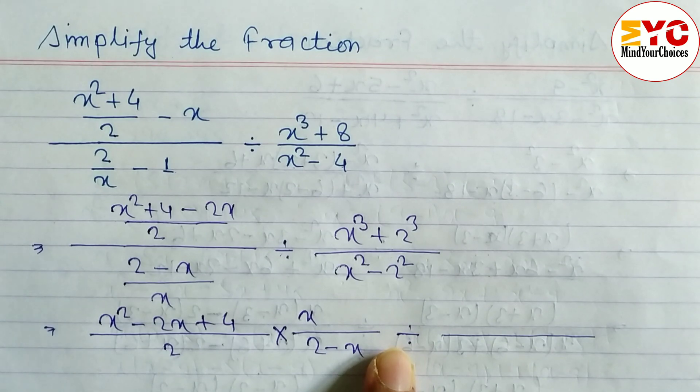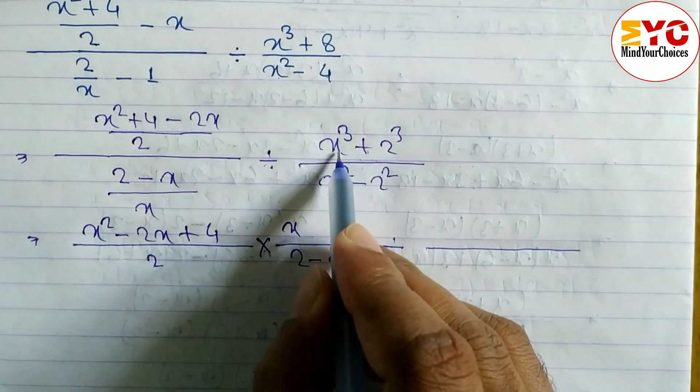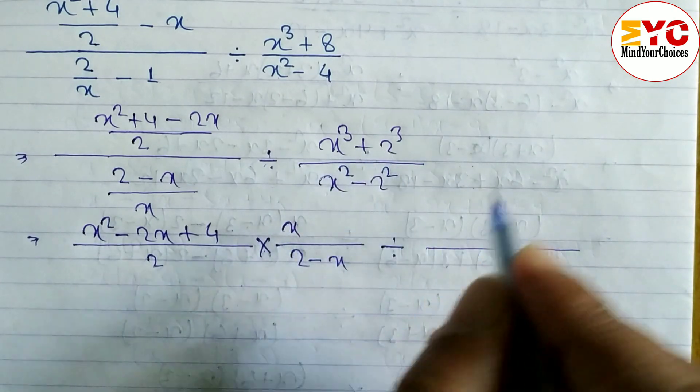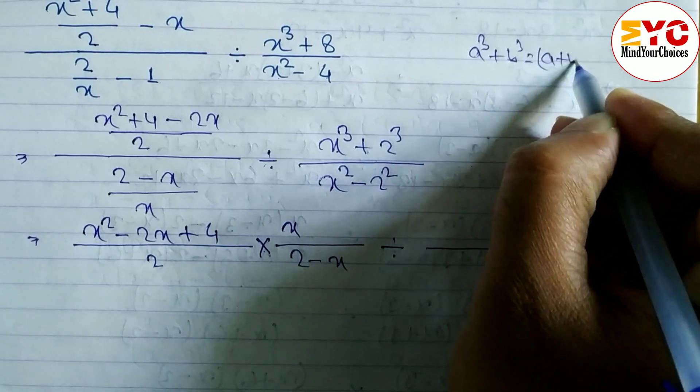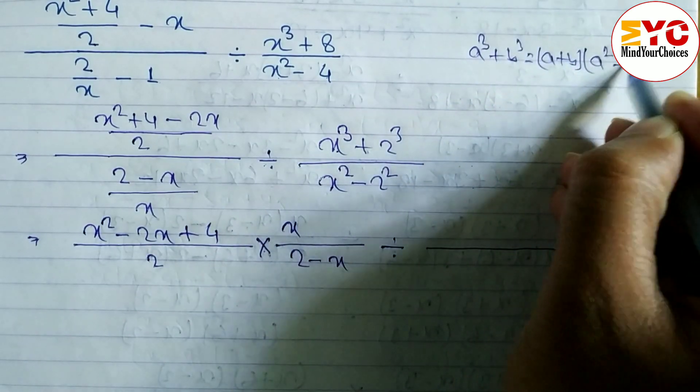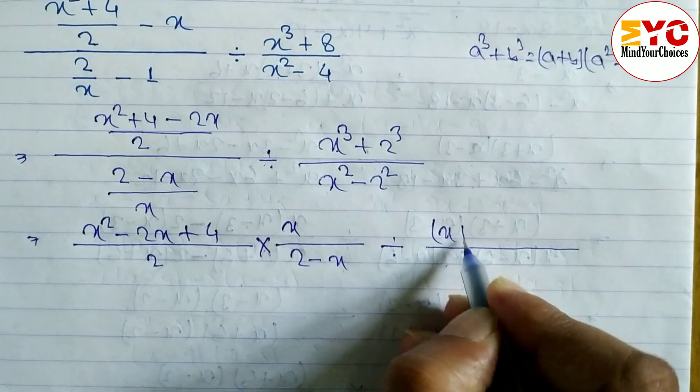Look at now, a³ + b³, what is the formula of this? a + b, a² - ab + b². So here also we have to write here x + 2, x² - ab...